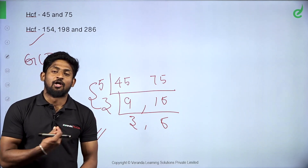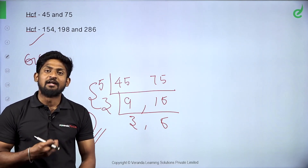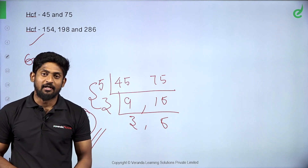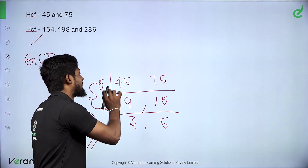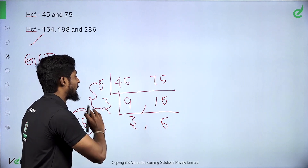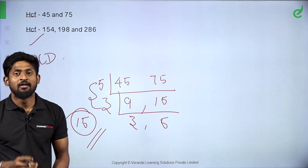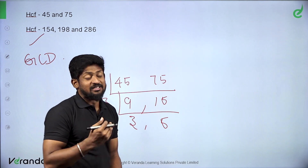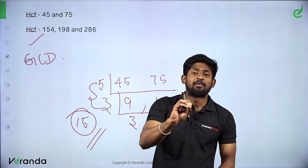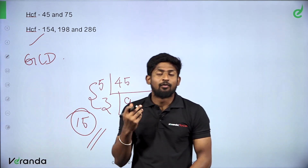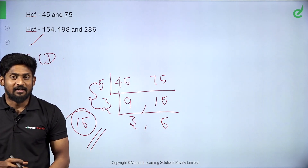If you solve this using the factorization method, you can solve it, but it can create difficulty. Now, if you divide using the division method: 45 and 75. Divide by 5 to get 9 and 15, then divide by 3. Suppose if you get a number you are not familiar with, you may not have knowledge of its factors.